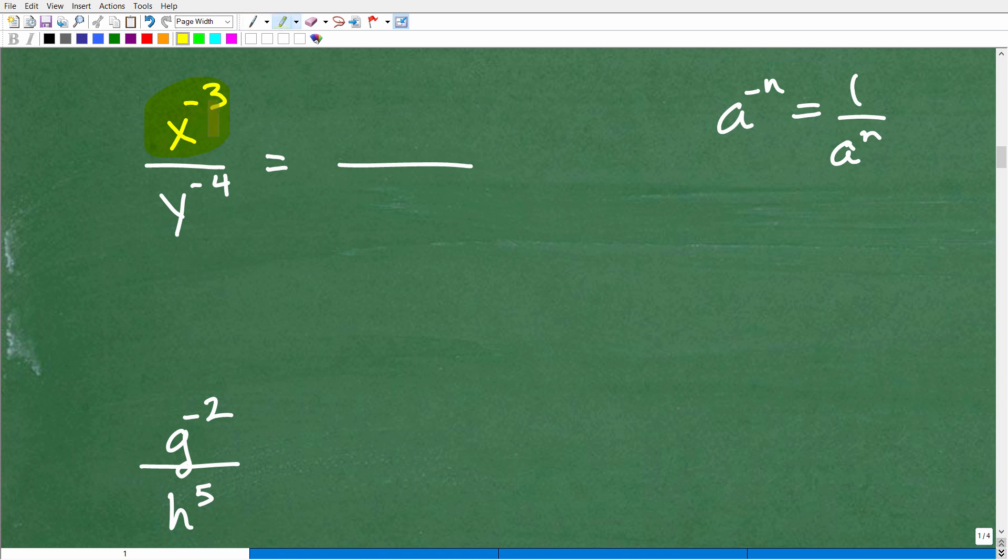So here I have x negative 3. I'm like, yeah, I'll put you down there, and that will become positive x cubed. No problem. And then here, this guy has a negative exponent y to the negative 4. Let's move it upstairs, and it becomes positive 4, and you are done.